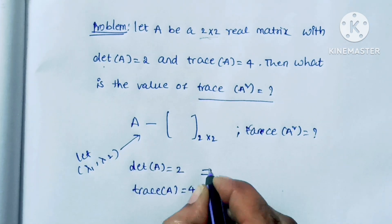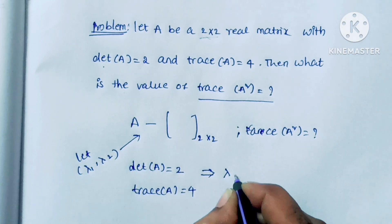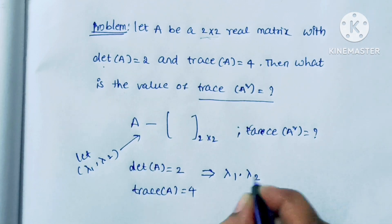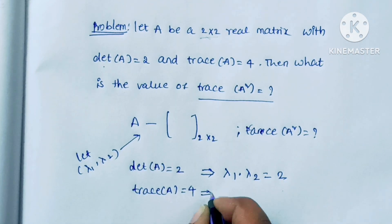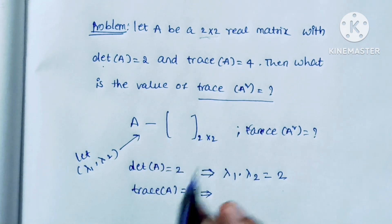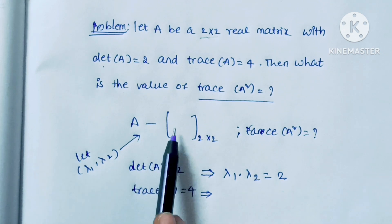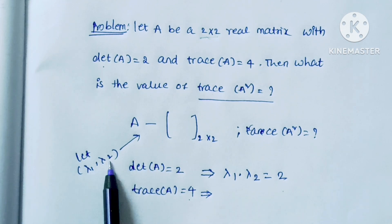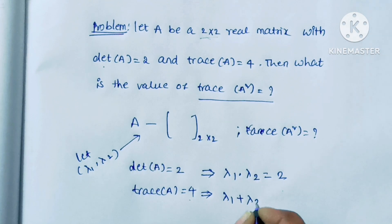We know that determinant of A means product of the eigenvalues, which is equal to 2. And trace A means sum of the diagonal elements, which is equal to 4. So the sum of the eigenvalues is equal to the trace of the matrix, which is 4.